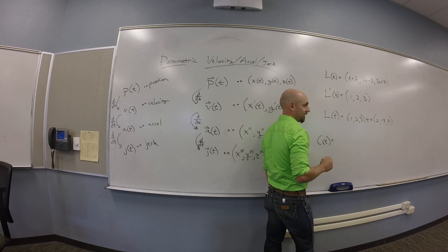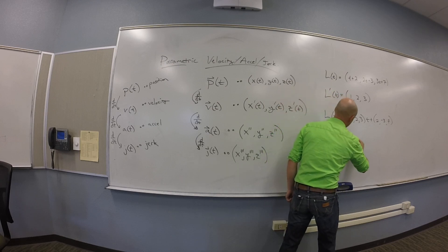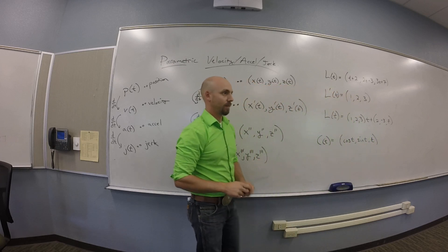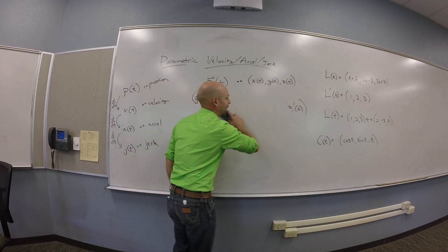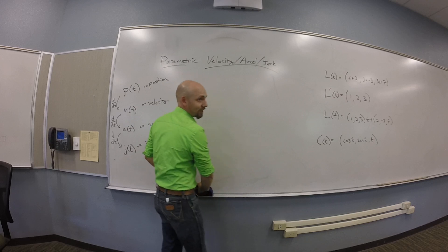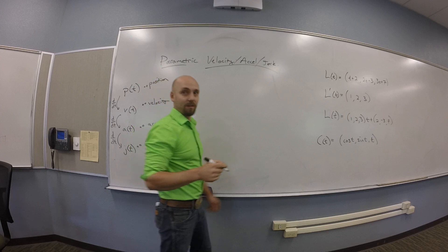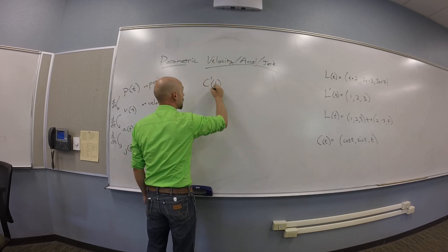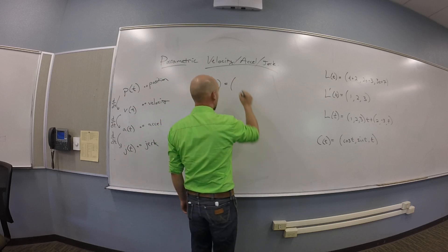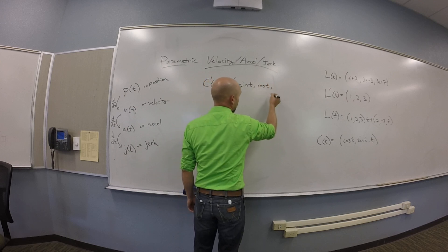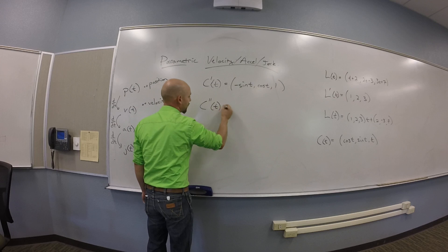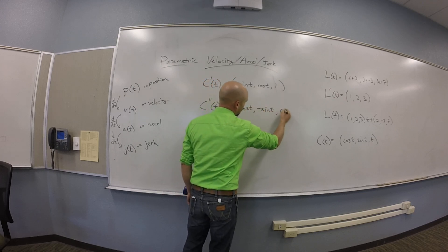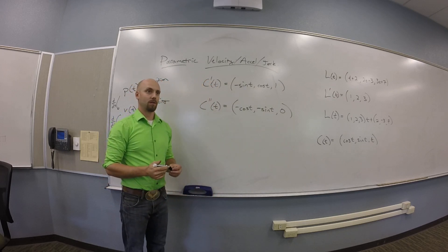Here's another thing. I'll give you a function c of t. C of t is going to be cosine t sine t t. Is that a line? The c kind of stands for a circle. This is not actually a circle. It's a helix. So if you take a derivative, you get, let me call that c prime of t. What do you get? It's negative sine t, cos t, and 1. If you take c double prime, if you look at the acceleration, what do you get? Negative cosine t, negative sine t, zero.